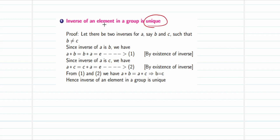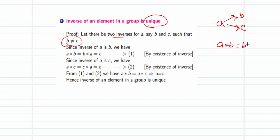The next property states that the inverse of any element in a group is unique — if an element has an inverse, that inverse is exactly one. Assume there are two inverses for element a: say b and c, where b ≠ c. If b is the inverse of a, then a★b = b★a = e. If c is the inverse of a, then a★c = c★a = e.